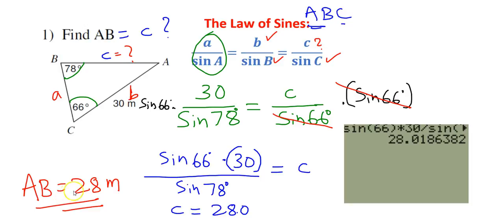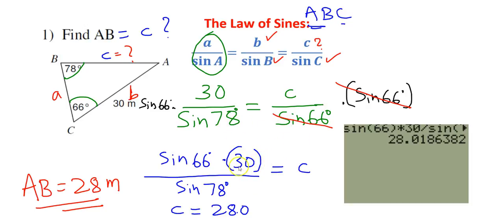Now, what if you have to find the measure of an angle? Before going to that, let me review what to do before starting a problem. First, label correctly with lowercase a, b, and c for the information supplied. Check what is given, then decide which two ratios to use, and simplify to get your answer easily.